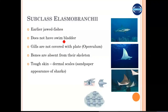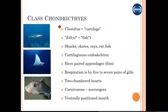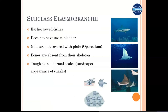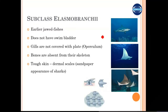Another characteristic feature is that all Chondrichthyes do not have a swim bladder in their body. Class Chondrichthyes can be divided into two subclasses: subclass Elasmobranchii, the larger group which includes sharks and stingrays, and subclass Holocephali, which includes the ratfish.